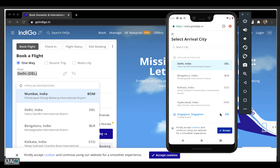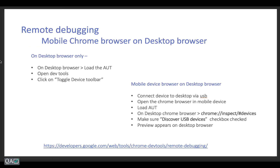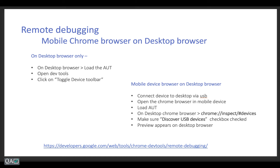That's why remote debugging replicates the mobile browser view on your desktop browser — that is what we are going to learn today. There are two options: without using your mobile device, you can replicate the mobile browser view. And if in some cases the mobile view is not appearing properly on your desktop browser, you can use actual remote debugging by connecting your mobile device or launching the simulator. Let's see them one by one.